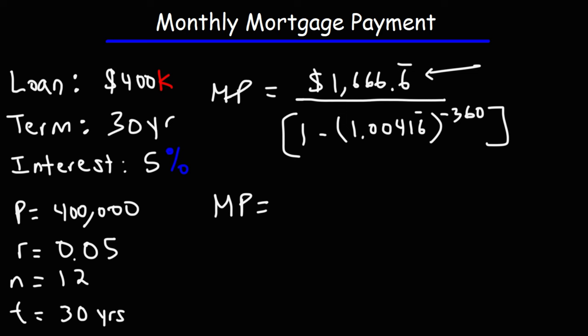And don't forget to add the parentheses inside the brackets as well. So, the answer that I got is $2,147.29 if you round it.